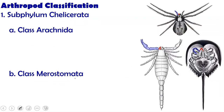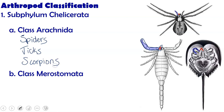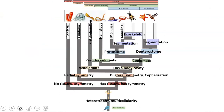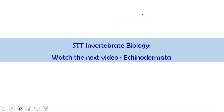The last group of arthropods is subphylum Chelicerata, named for the chelicerae — pinchers that appear behind the mouth. This includes class Arachnida, which has spiders, ticks, and scorpions, as well as class Meristomata, which includes horseshoe crabs. On the cladogram, arthropods are closely related to annelids — both are segmented protostomes — but what distinguishes an arthropod from an annelid is the exoskeleton.